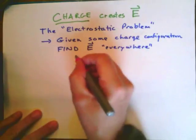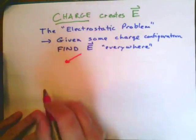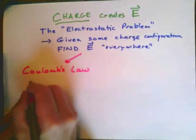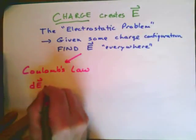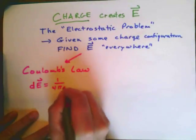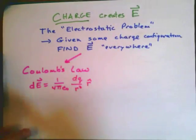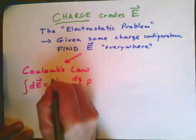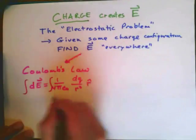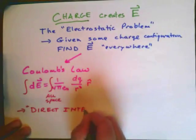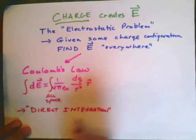So far we've looked at Coulomb's law, which in differential form can be written as a one-over-r-squared law. We can integrate this — it's an integral we do over all space. We call the method of applying this direct integration.